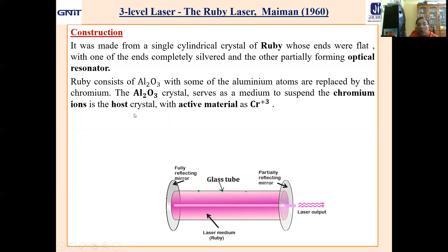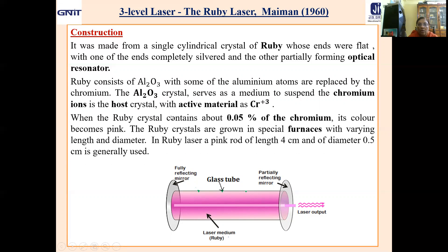Aluminium is the host crystal because it suspends the active material — the chromium. When the ruby crystal contains only 0.05% chromium — that is, when aluminium is replaced by chromium at 0.05% — its color becomes pink. These ruby crystals are grown in special furnaces. The most commonly used ruby rod has a length of 4 cm and diameter of 0.5 cm.